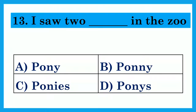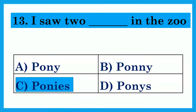I saw two dash in the zoo. Option A: Pony. Option B: Pony. Option C: Ponies. Option D: Ponies. Look at the spellings. The answer is Option C: Ponies — I saw two ponies in the zoo.